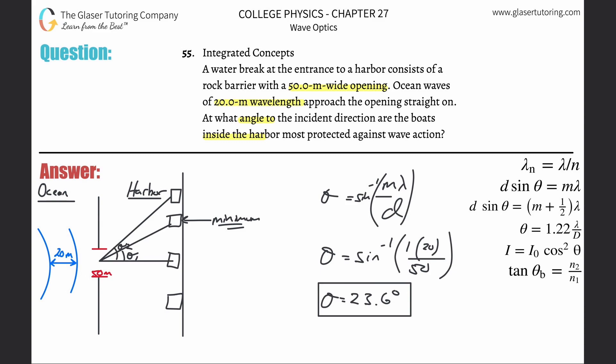That'd be one safe location. So this theta one is basically 23.6 degrees. You're good if you dock your boat at 23.6 degrees relative to this horizontal. But is there another one? Well, let's check it out.